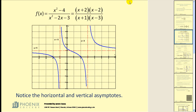Many rational functions have vertical and horizontal asymptotes. For example, this graph has two vertical asymptotes — one at x = -1 and another at x = 3. Remember, a vertical asymptote is just a vertical line that the graph approaches but never touches.